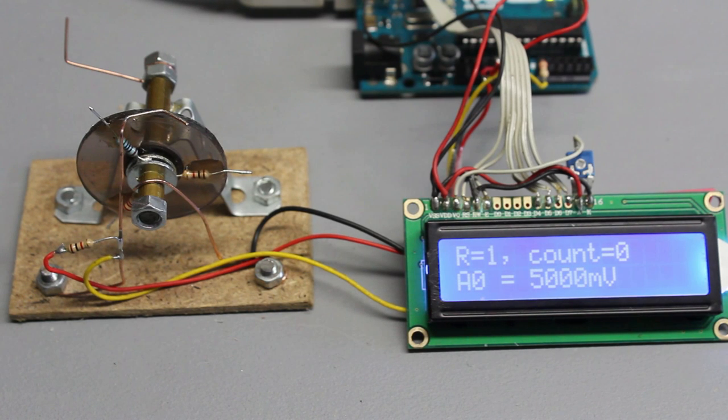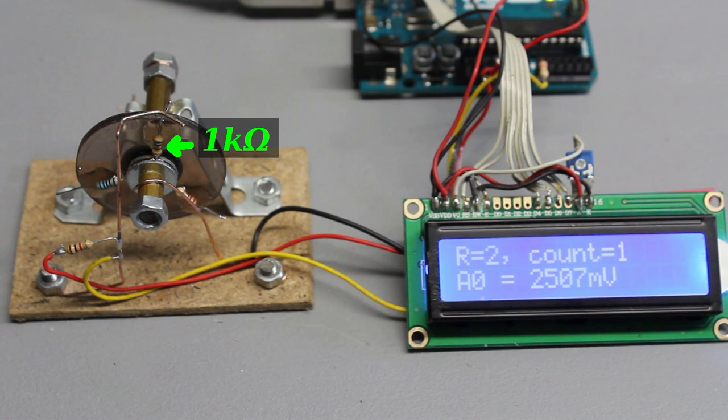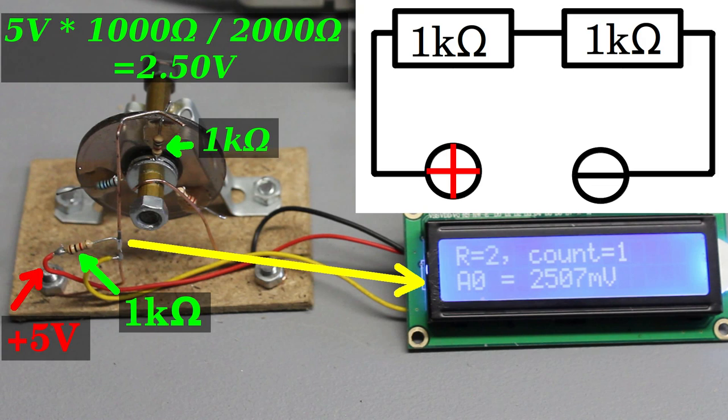As soon as the switch breaks contact, the reading jumps back to 5V, while the recorded value is 2507mV as soon as the wire touches the 1kΩ resistor. The voltage divider is now composed of two 1kΩ resistors by what we get a voltage drop of 2.5V in theory.